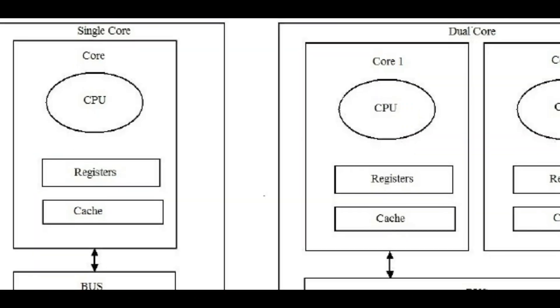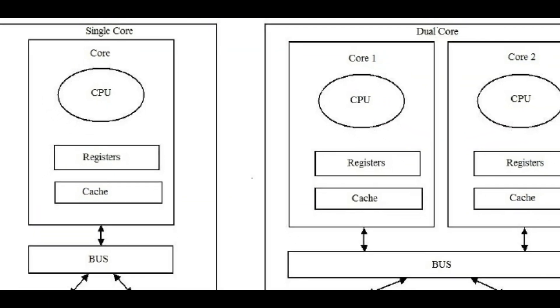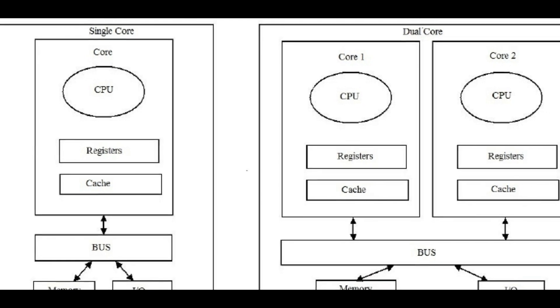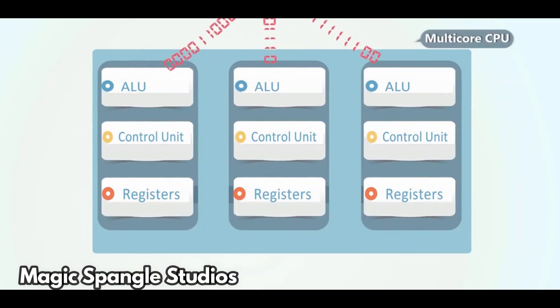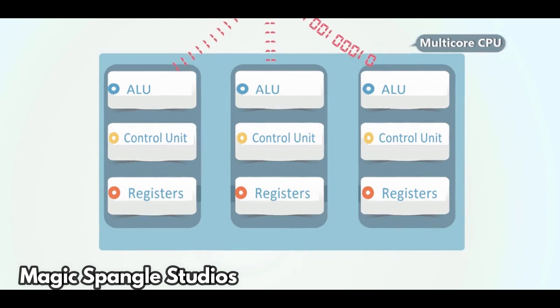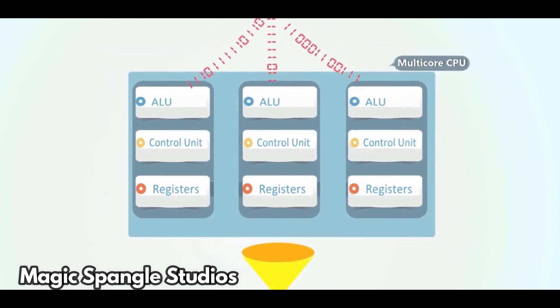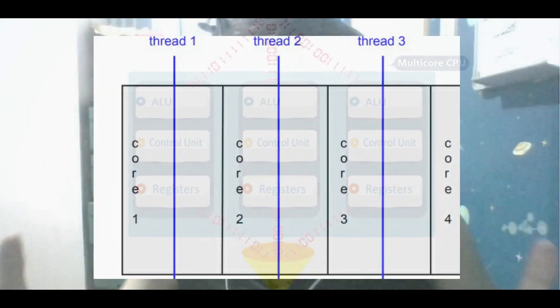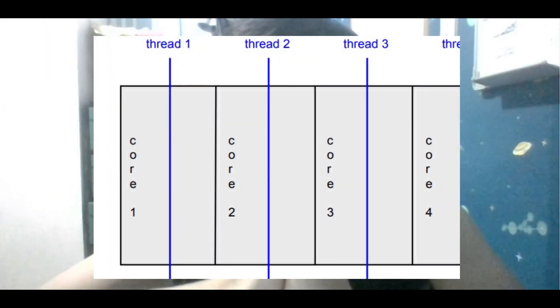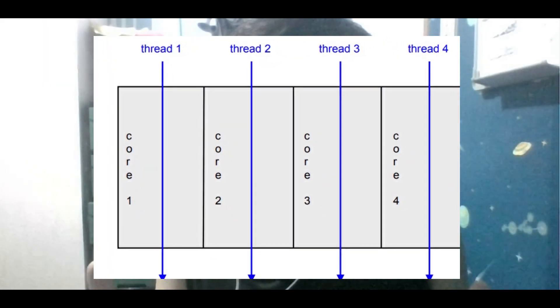This is because in group work, the work is distributed to each member of the group, resulting in an increase of performance. The same principle applies to multi-core versus single-core processors. With a multi-core processor, a heavy task can be distributed among cores that execute instructions independently, and these cores are integrated into a single chip, allowing for parallel processing.